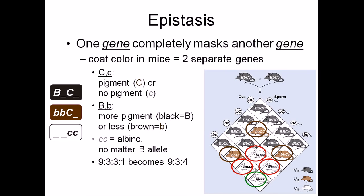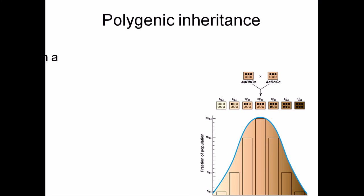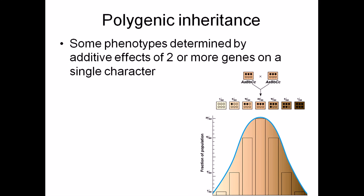The modified ratio from the Mendelian ratio is 9:3:4. What is polygenic inheritance? Polygenic inheritance means some phenotypes are determined by the additive effect of two or more genes.